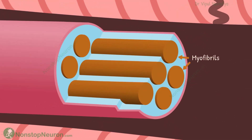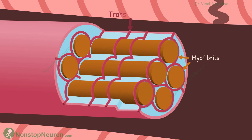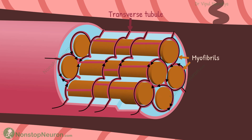Along with this contractile machinery, the myocytes also have T-tubules that invaginate from the membrane to inside the cell. Apart from radial tubules, they also have axial tubules. These T-tubules help spread the action potential from the surface to deep inside the cell, making excitation-contraction coupling faster.